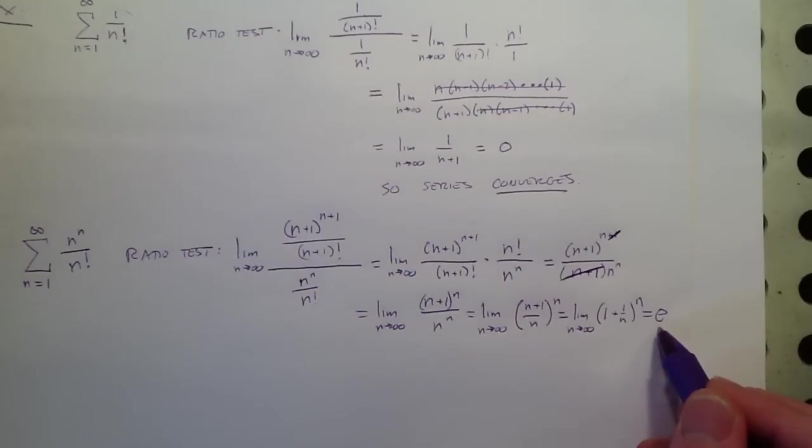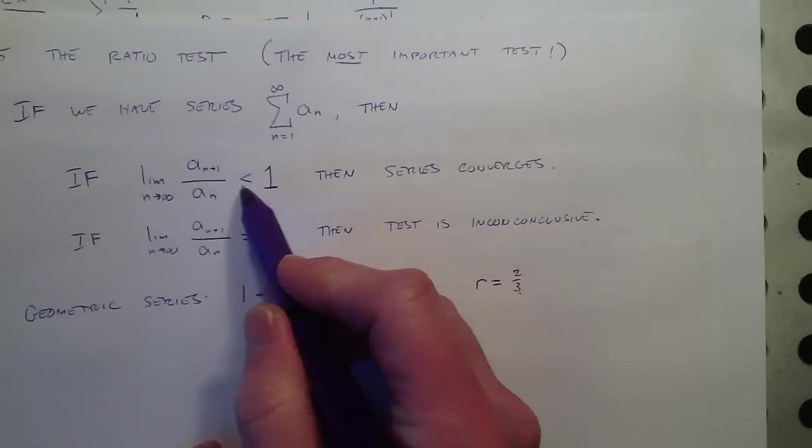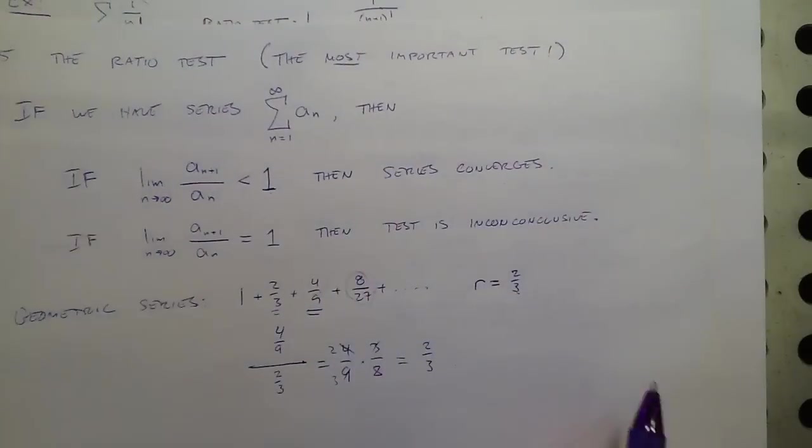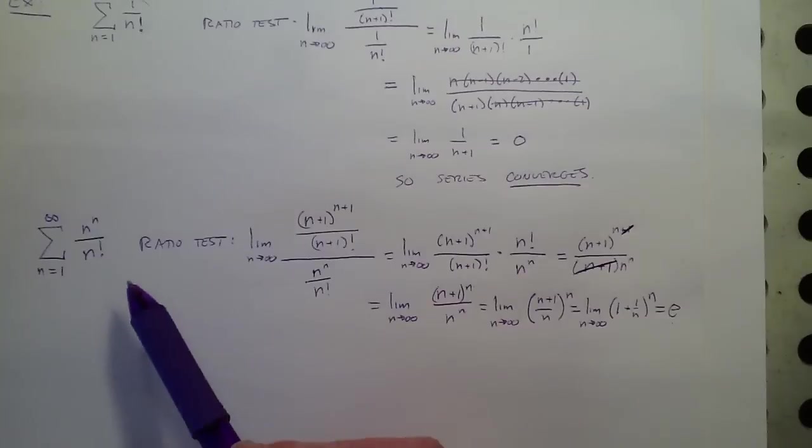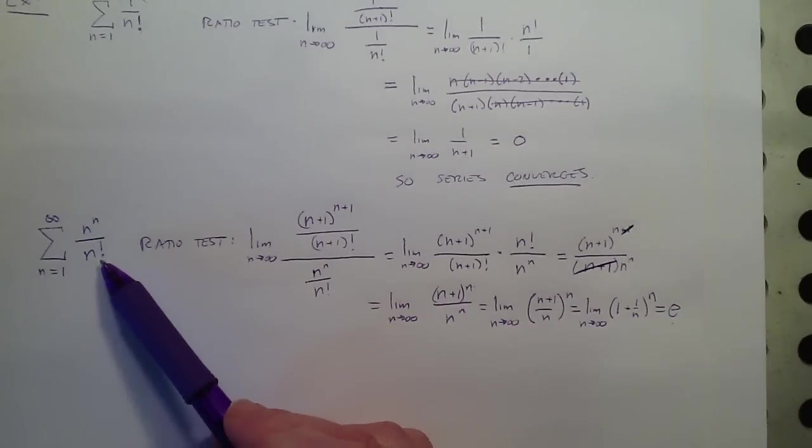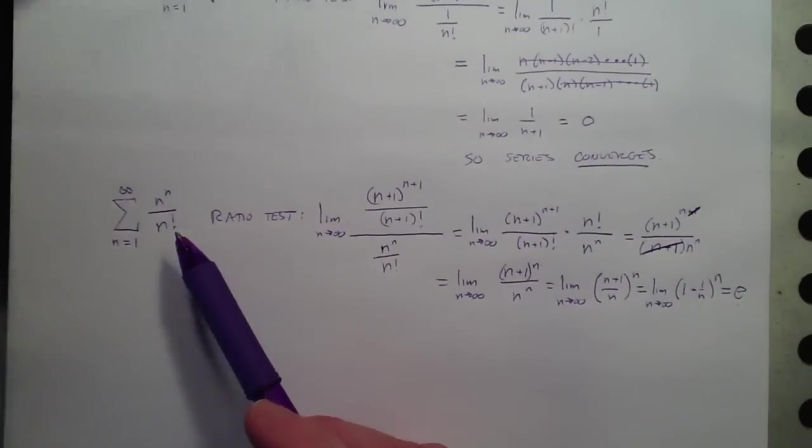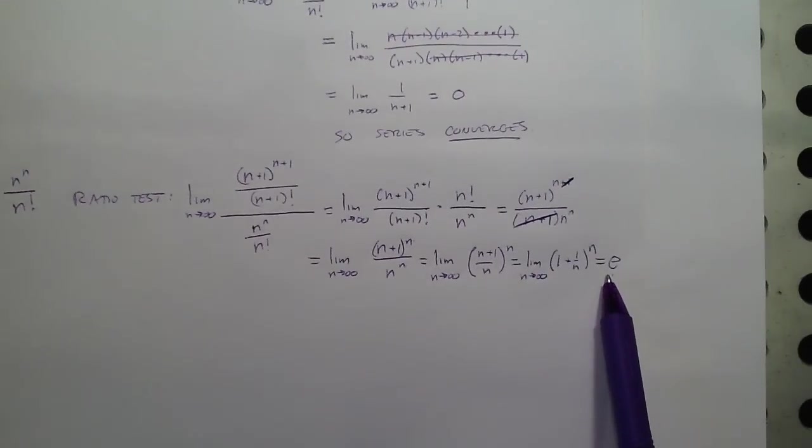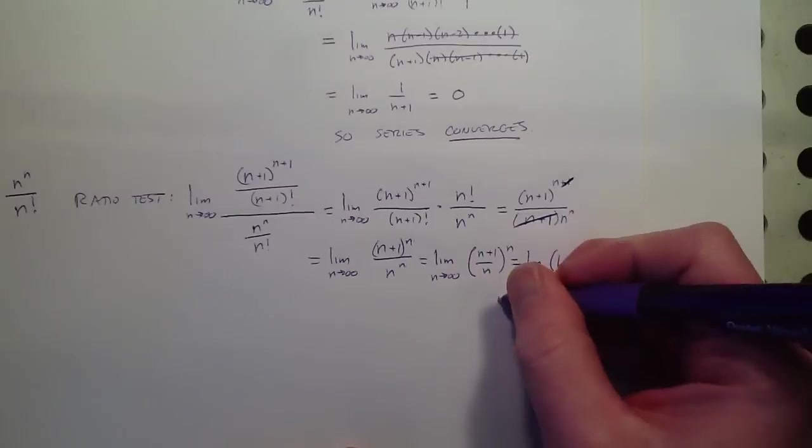And what does that mean? Well for it to converge that limit has to be less than 1. So what we just discovered is indeed this series does end up behaving like a geometric series but it gets more and more like a geometric series where the multiplier is E and that is not going to converge because geometric series only converge when the multiplier is less than 1 so this diverges.